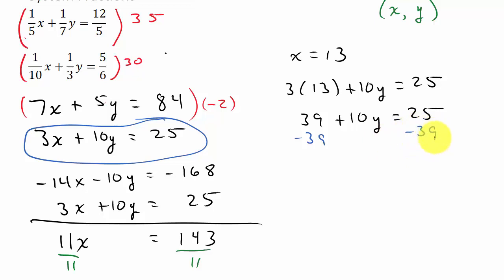And then I need to subtract 39 from both sides. Okay. So let's see. That is going to give me 10y equals negative 14. And then I'll divide both sides by 10. And so I get y is equal to, and that will reduce to negative 7 fifths.